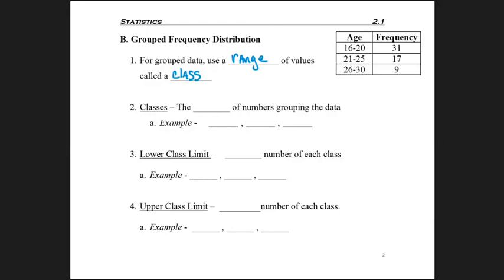More specifically, the class is the interval of numbers that's grouping the data. So like our first class for the table above is 16 to 20. The second class, 21 to 25. And the third class is 26 to 30.